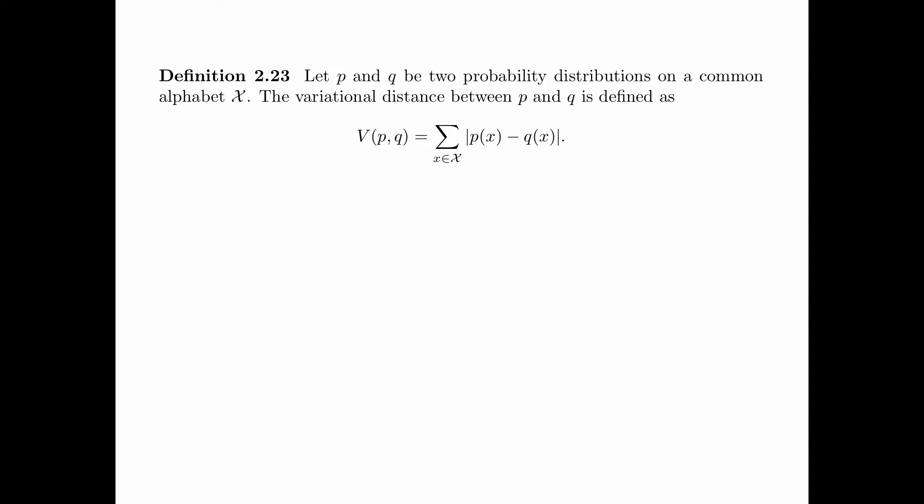The next definition explains what it means by the continuity of the entropy function. Let p and q be two probability distributions on a common alphabet script X. The variational distance, also called L1 distance, between p and q is defined as V(p,q) equals the summation over all x of the absolute difference between p(x) and q(x).